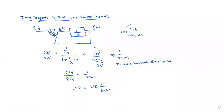Time response of the first order control system. This is the basic block diagram of the first order control system. We take down the transfer function of this block diagram. The transfer function C(s)/R(s) is equal to 1/Ts divided by 1 plus Ts, which simplifies to 1/Ts into 1.